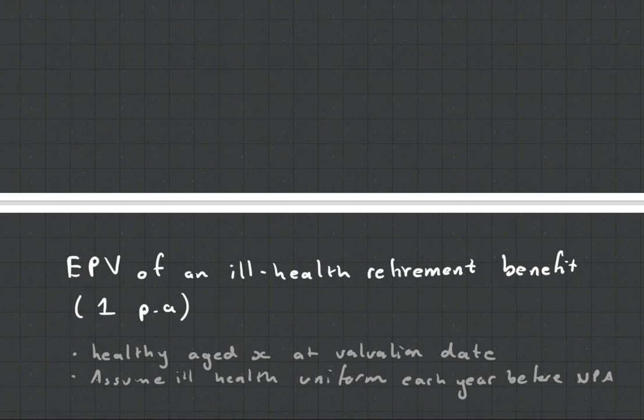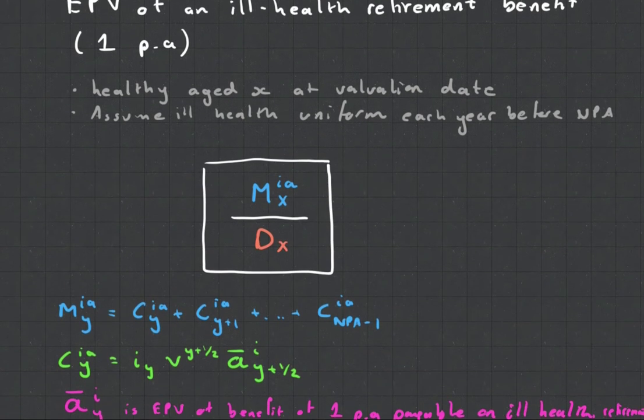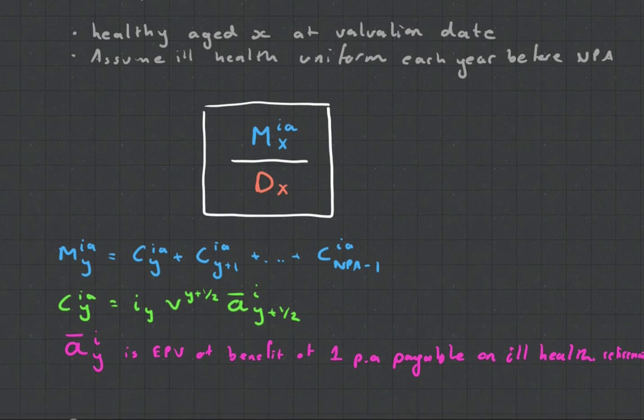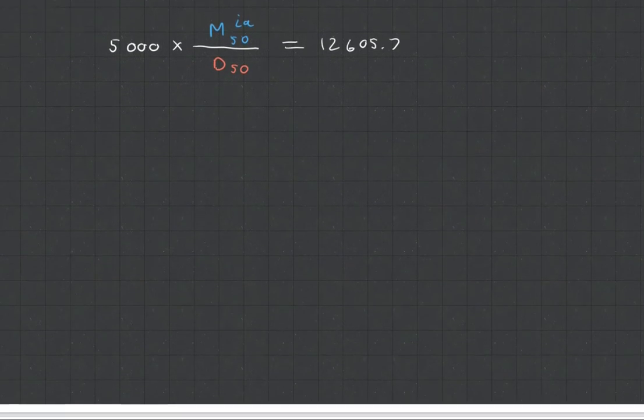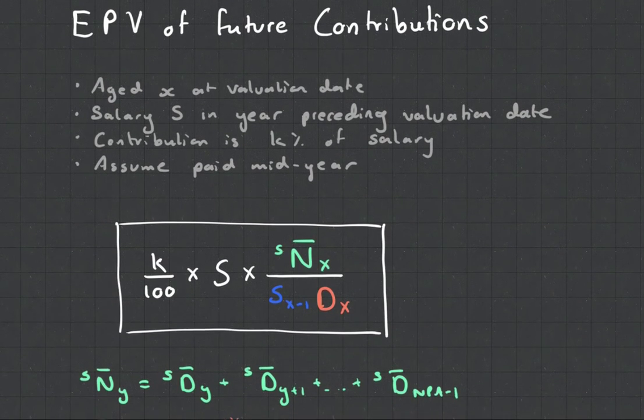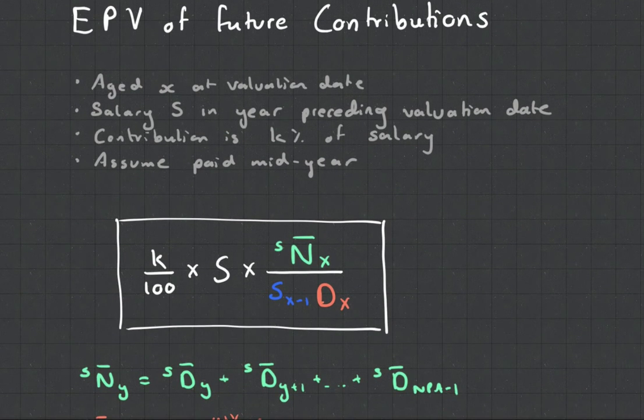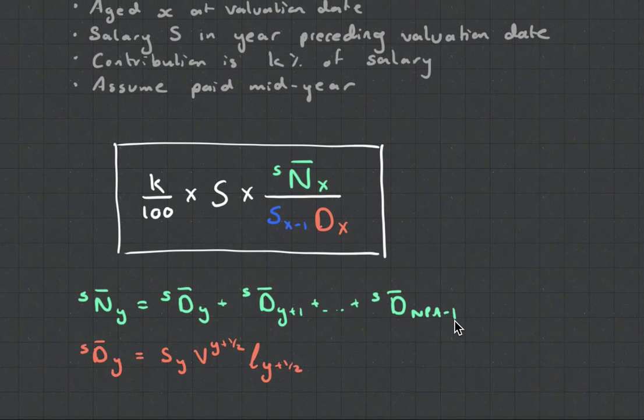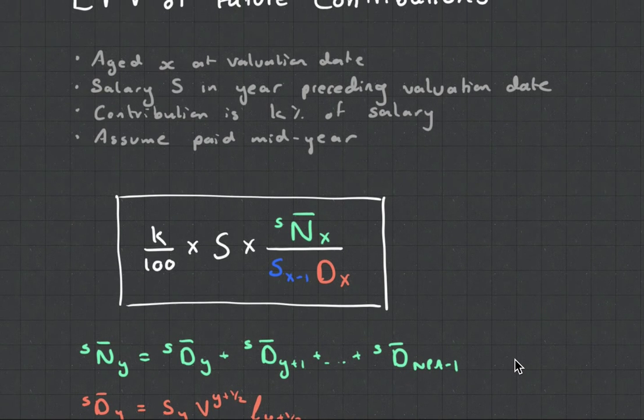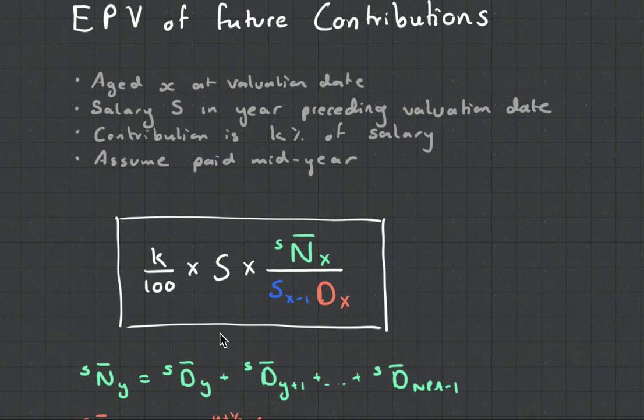The ill health retirement benefit, this actually makes it much simpler. It's just a different decrement. Otherwise, it's kind of the same stuff. And then the final thing is this whole future contributions, which introduces yet another commutation function. And this is the sum of D bars, and D bars is equal to that. And this is how much, what percentage of someone's salary do they have to contribute in order to meet a pensionable fund?